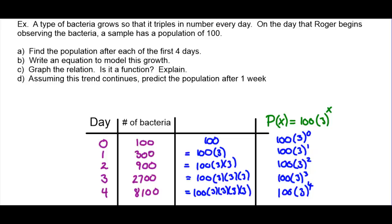So here's our formula — our model for this exponential growth — where x is the variable. It's interesting because x happens to be in the exponent, which we haven't seen before. We have a starting amount, a rate of growth — in this case tripling, so our rate is 3 — and our variable is the exponent x.